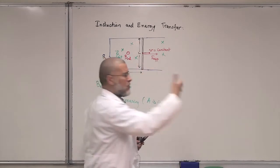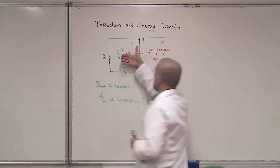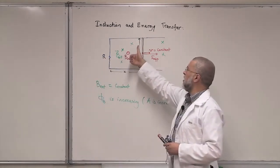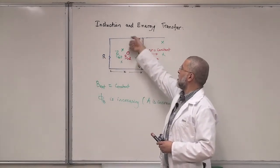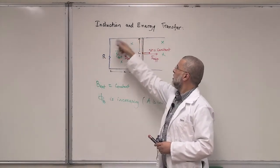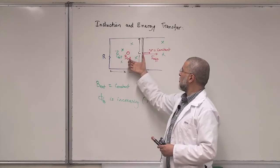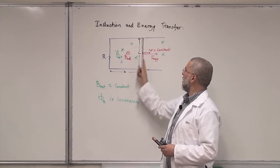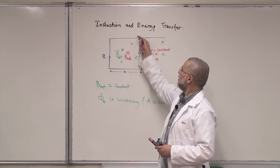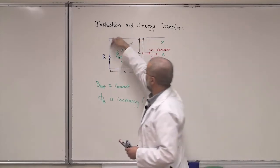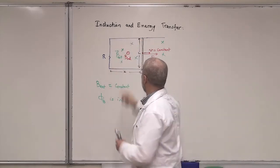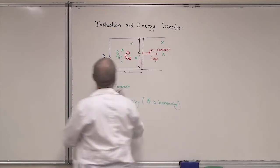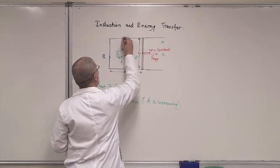Once I get B induced, can you tell me the direction of the induced current? Remember: your fingers align with B, and the current will be with the thumb. You put the thumb here, which means going up here, to the left, down, and to the right. So this is my I induced.